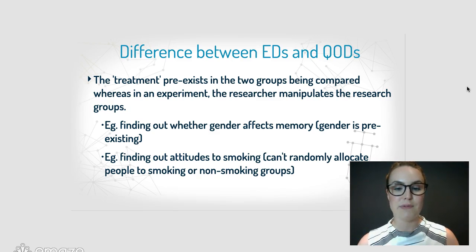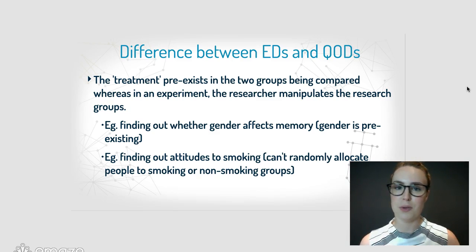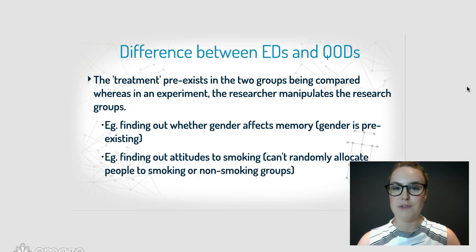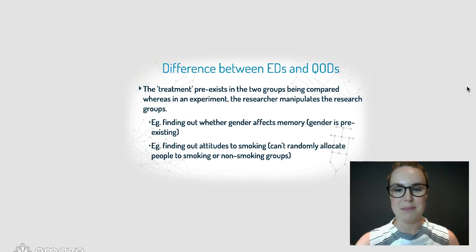Another example could be finding out attitudes to smoking. You can't randomly allocate people to smoking or non-smoking groups — you would land yourself in big ethical problems there.